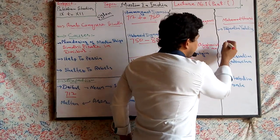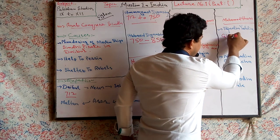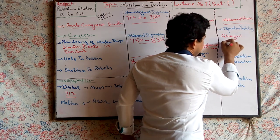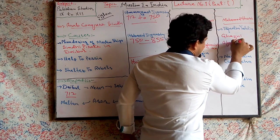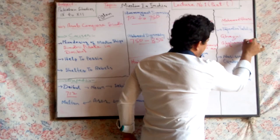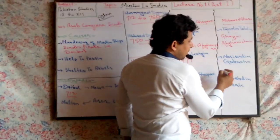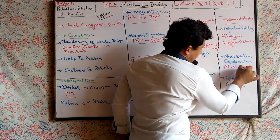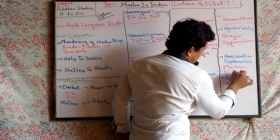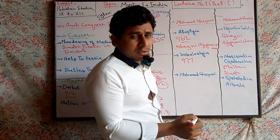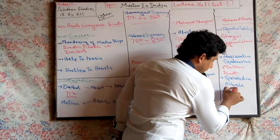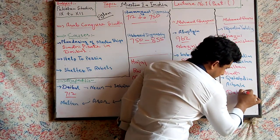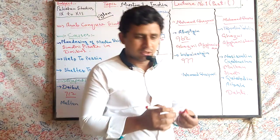In Ghazni, Afghanistan, and Nasiruddin Kabachah in Multan and Sindh. Qutbuddin Aibag was appointed in Delhi and other areas in northern India.